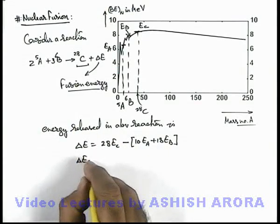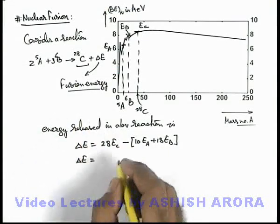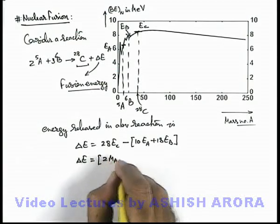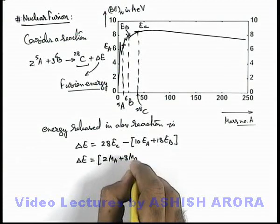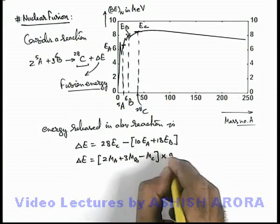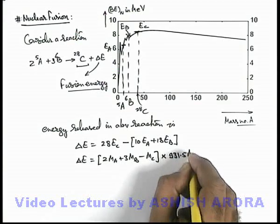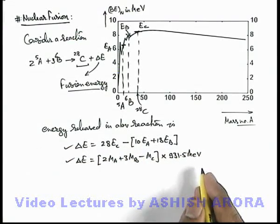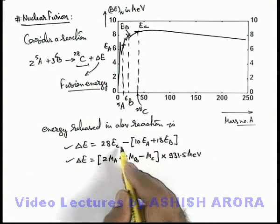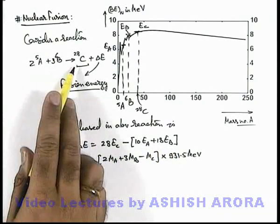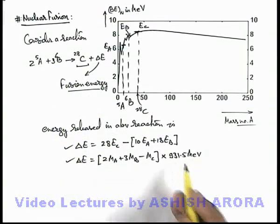And the same energy can also be calculated by using a method of mass defect as 2 MA plus 3 MB minus MC multiplied by c squared or 931.5 MeV. Both of these methods will result in the same value, because here we are calculating directly by binding energy per nucleon for the nuclei involved in the reaction, and here we are calculating the energy released by using mass defect.